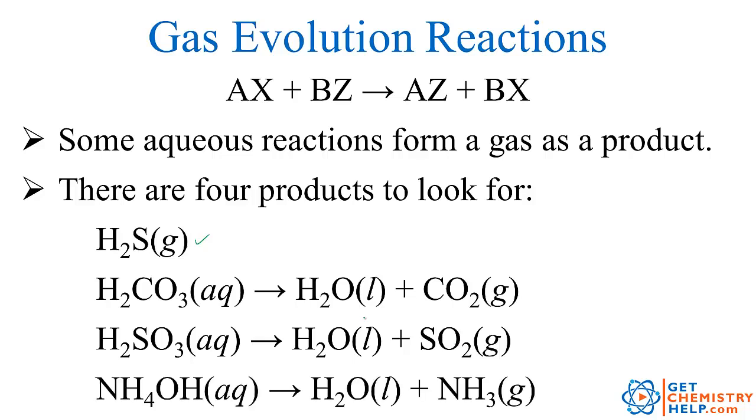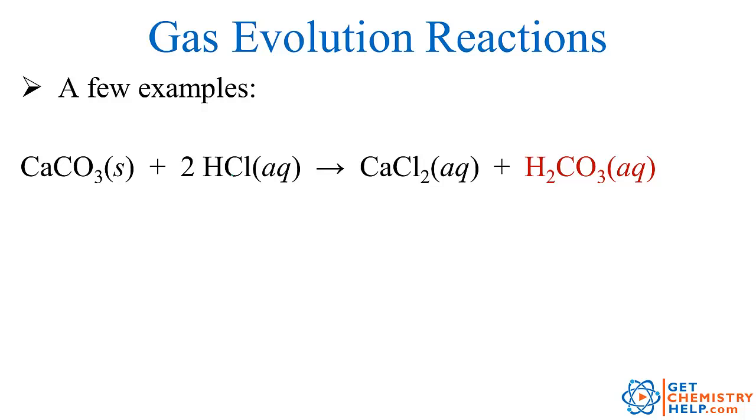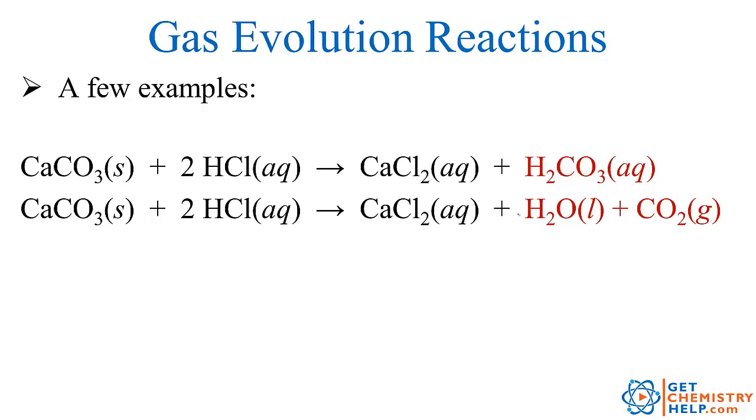And the fourth and final product to watch out for is ammonium hydroxide. So if you produce ammonium hydroxide, you can replace that with water and ammonia gas. So here's how this works. Calcium carbonate reacts with hydrochloric acid, so you would normally just swap the anions. So you would put calcium with chloride to make calcium chloride and hydrogen with carbonate to make carbonic acid. But now we learned that carbonic acid is in fact water with carbon dioxide dissolved in it. So instead of writing H2CO3 we will just remove that and replace it with H2O liquid plus CO2 gas.